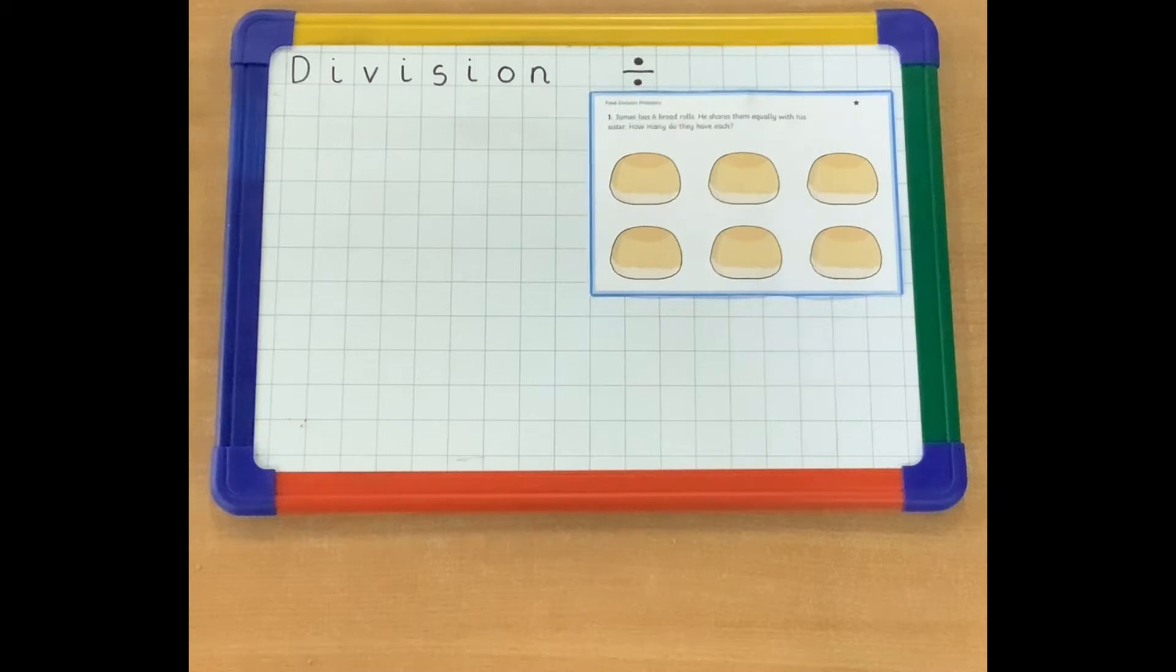So the question says, James has six bread rolls. He shares them equally with his sister. How many do they each have? So what you're going to need to do first is you're going to need to get your objects you're going to use to count. So I'm going to start with my Lego bricks.